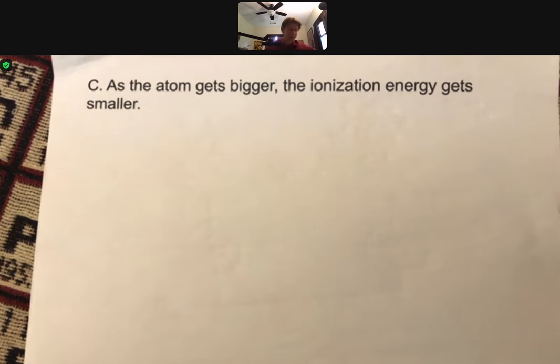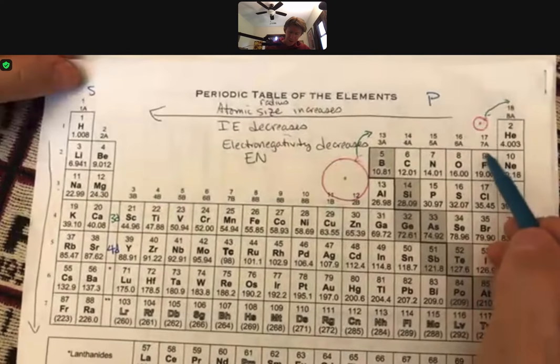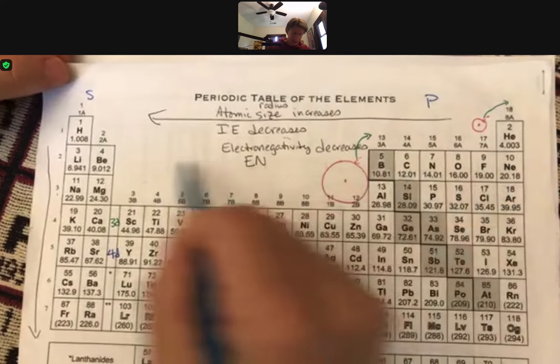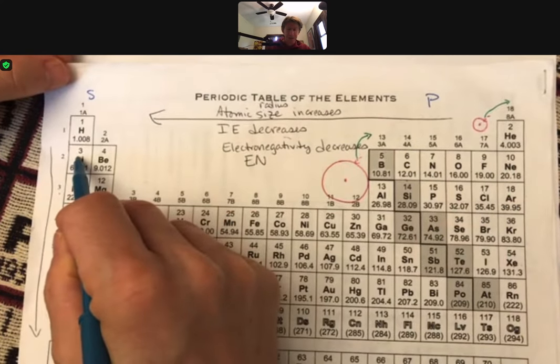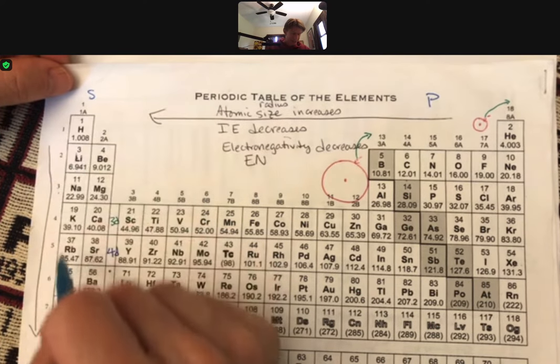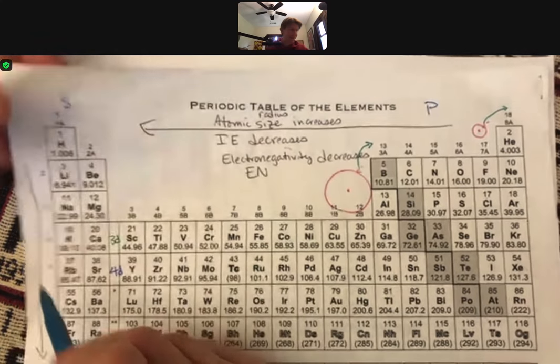We've said that as the trend goes, so as you go from fluorine to lithium, the ionization energy decreases as the atom gets bigger, and the ionization energy decreases as you go down a column.